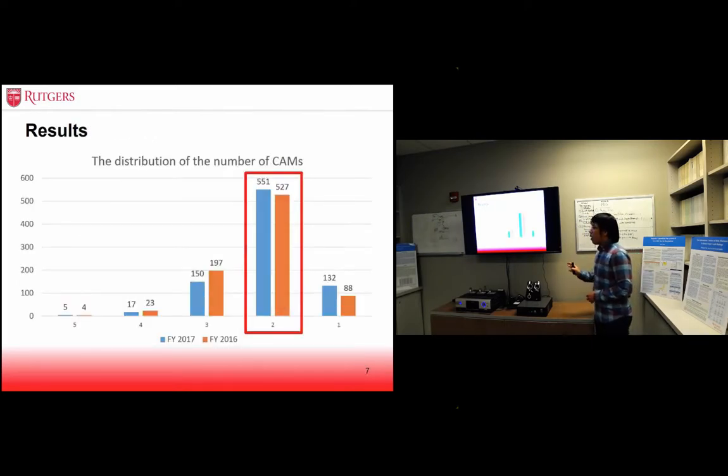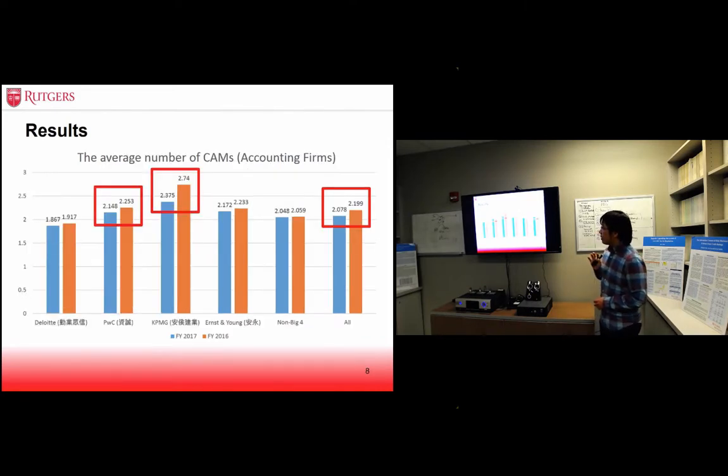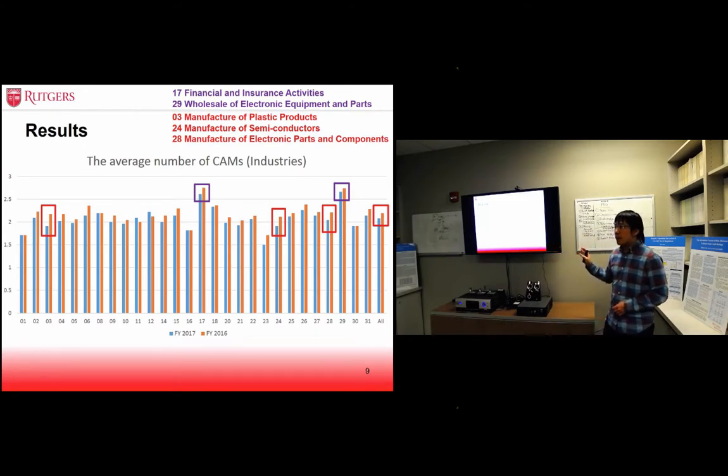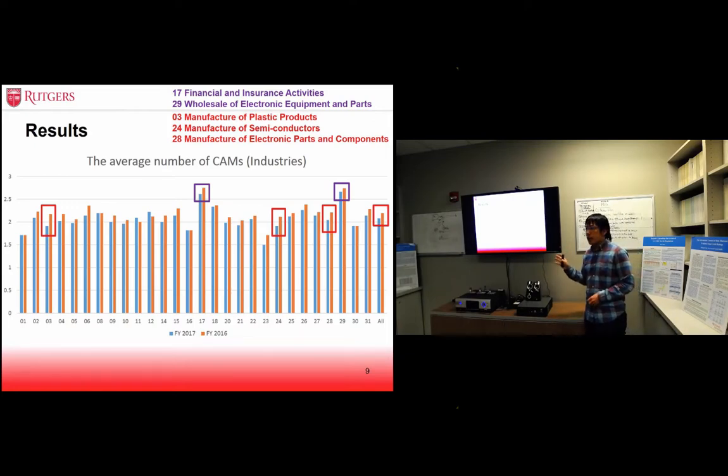Over half of companies have two CAM disclosures item in their auditors reports. PwC and KPMG and Hall observations have statistically significant different numbers of CAMs in their auditors reports. Three industries have significant number of CAM disclosures in their auditors reports for both years. Two industries have higher CAM disclosure number than other industries. This industry classification is based on the definition by Taiwan Stock Exchange Corporation.